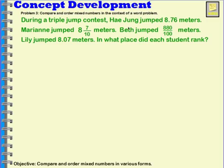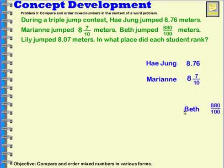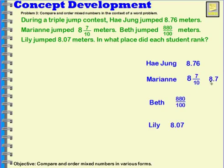Alright, so in order to do this, we're going to have to pull out our important information. So here we have Hae Jung and what Hae Jung jumped. Here we have Marianne, here's Beth, and Lily. This is what each of the students jumped. Now Hae Jung is already in a decimal, but Marianne is represented as a mixed number. Let's convert this to a decimal. 8 and 7 tenths would be written this way. And then let's do the same thing with Beth. Now thinking about Beth's 880 hundredths, if you have 100 hundredths, you have one whole. She has 800 hundredths, so she has 8 wholes and 80 hundredths more. So that would be 8 and 8 tenths. And then Lily has 8 and 7 hundredths.